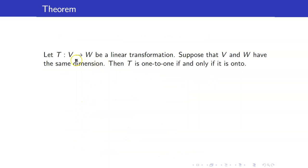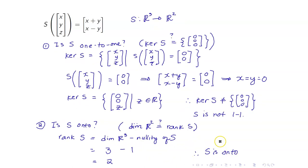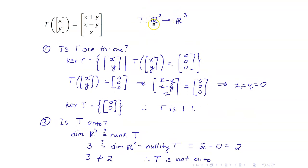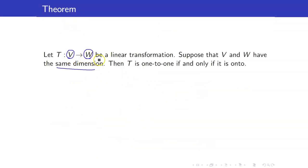Here is a nice result about linear transformations whose domain and codomain have the same dimension. Suppose T is a linear transformation where V and W have the same dimension. Then T is 1-to-1 if and only if it is onto, so we only need to check one property. In general, 1-to-1 and onto have nothing to do with each other — T from R2 to R3 is 1-to-1 but not onto, while S from R3 to R2 is onto but not 1-to-1. This theorem only works if the domain and codomain have the same dimension.